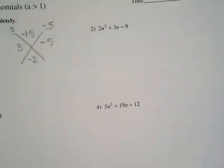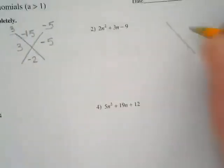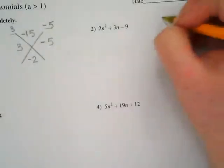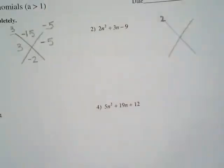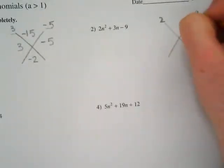You will have to check with the box soon. On 2n² + 3n - 9, I'm going to put my 2, my A term, up above here, and my negative 9 up above the x over here.